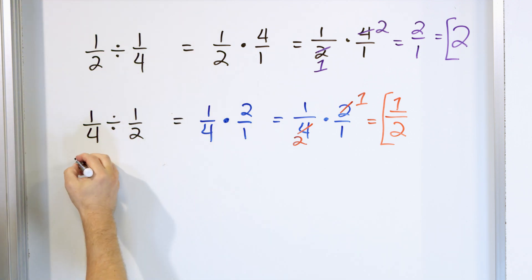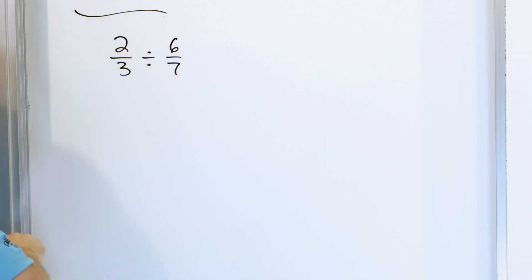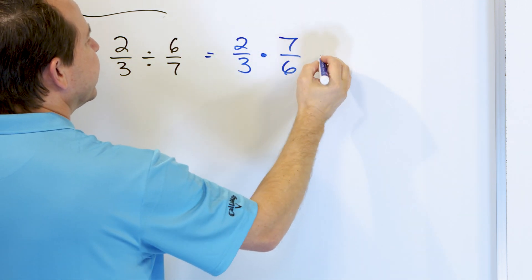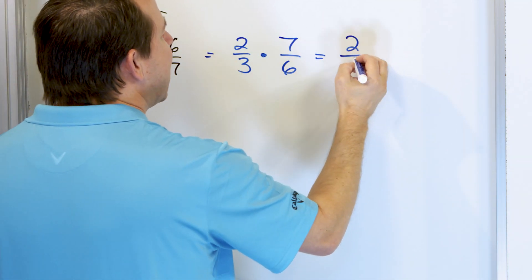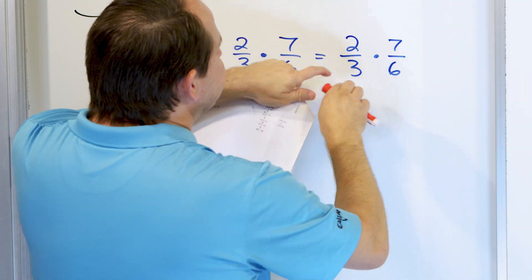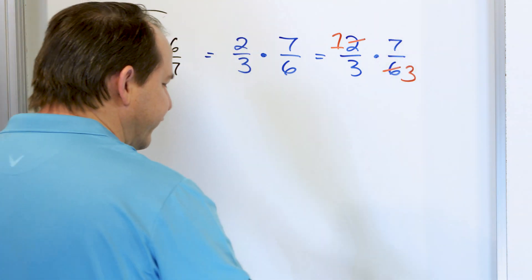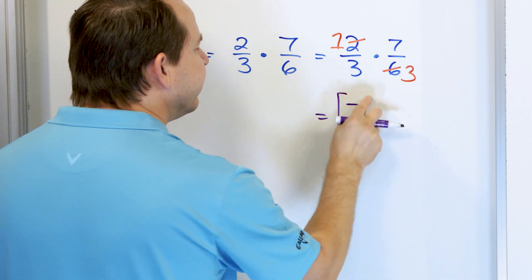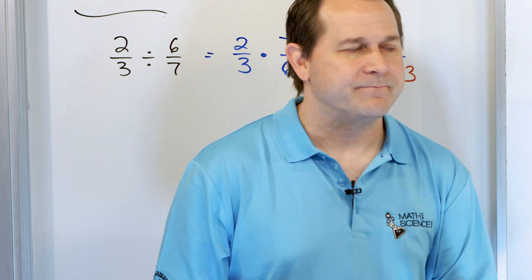Now let's practice. Two-thirds divided by six-sevenths. We write down two-thirds, the division changes to multiplication, the second fraction flips over to seven-sixths. I'm going to pre-simplify — cross-cancellation. I see a two and a six; divide by two: two divided by two is one, six divided by two is three. The seven and the three I can't simplify further. So the answer is one times seven is seven, and three times three is nine — seven-ninths. And notice this is fully simplified because we pre-simplified fully.